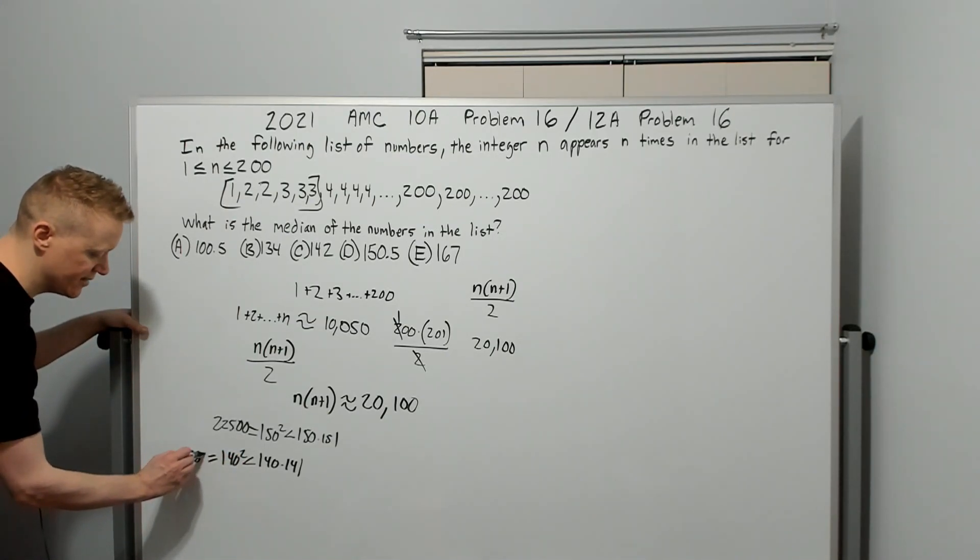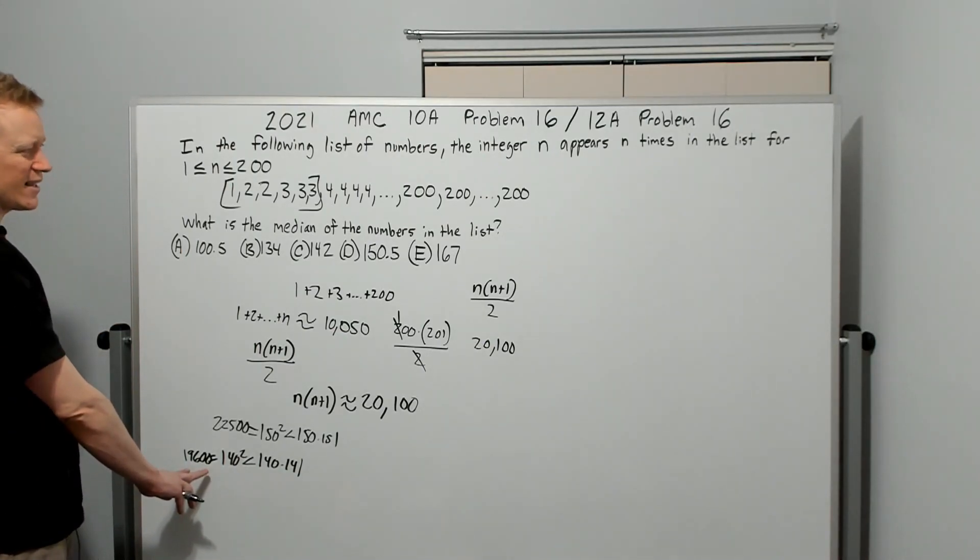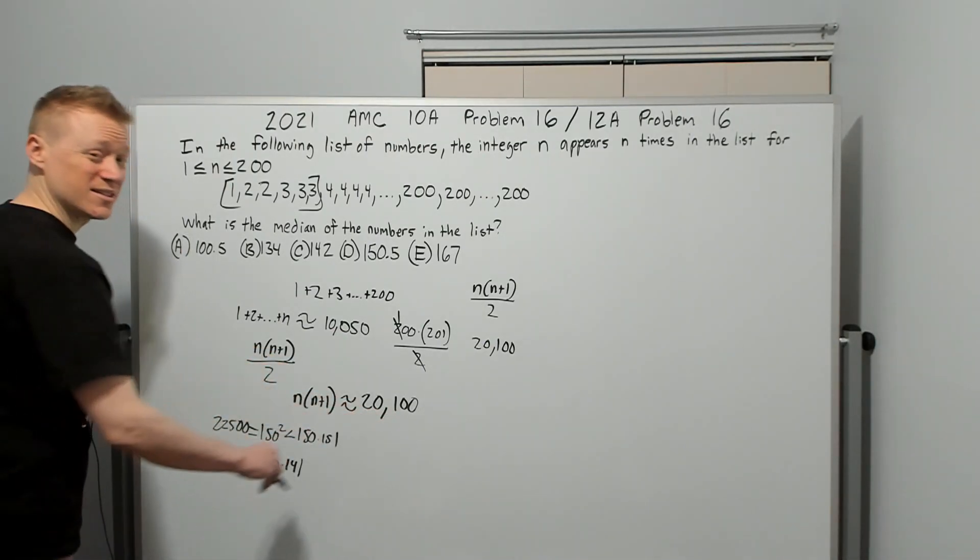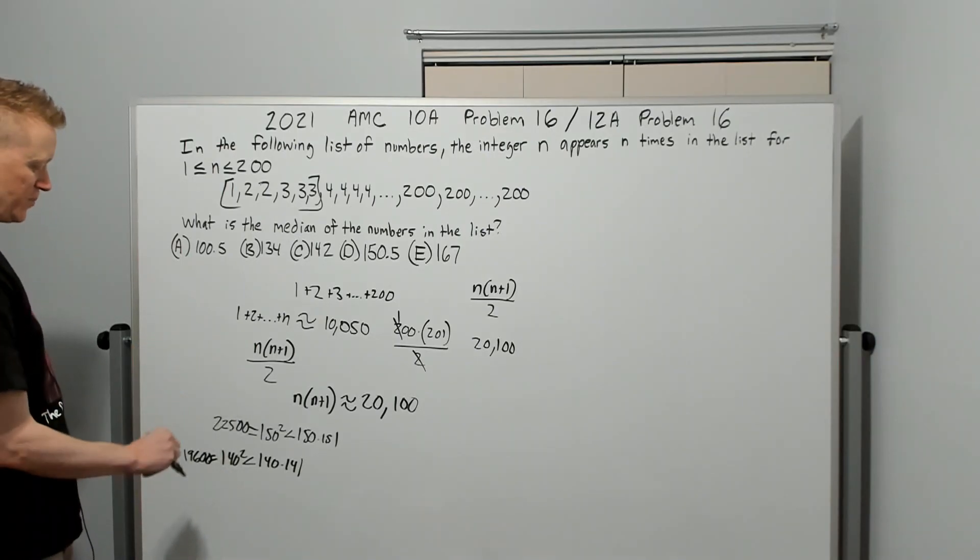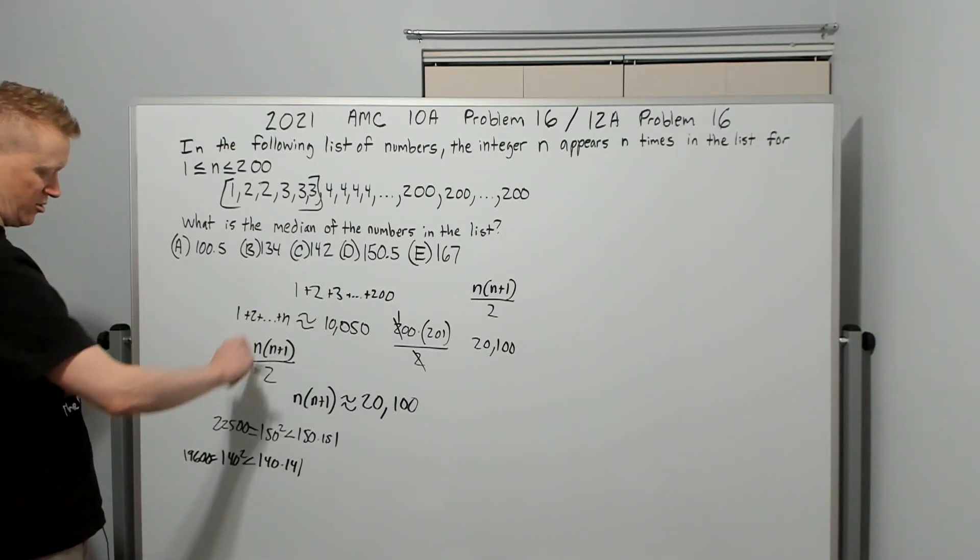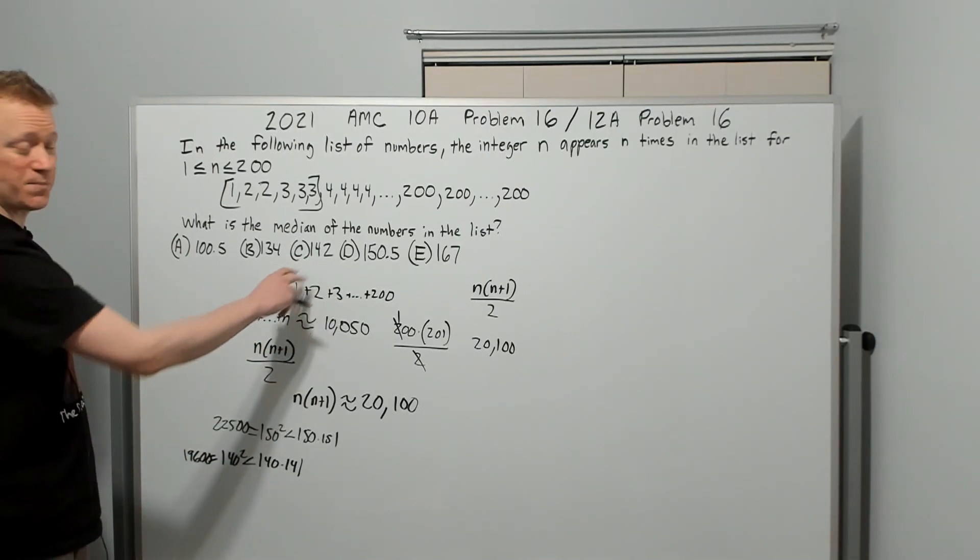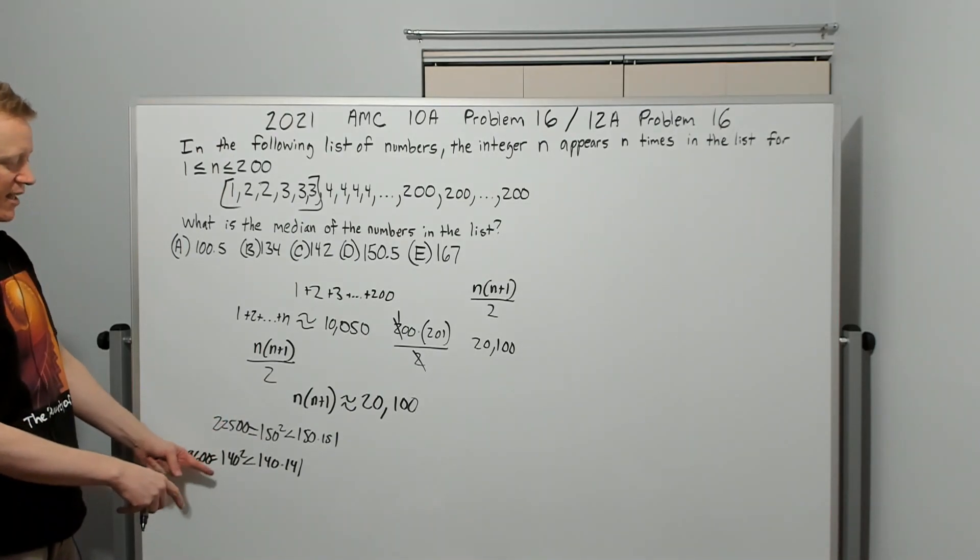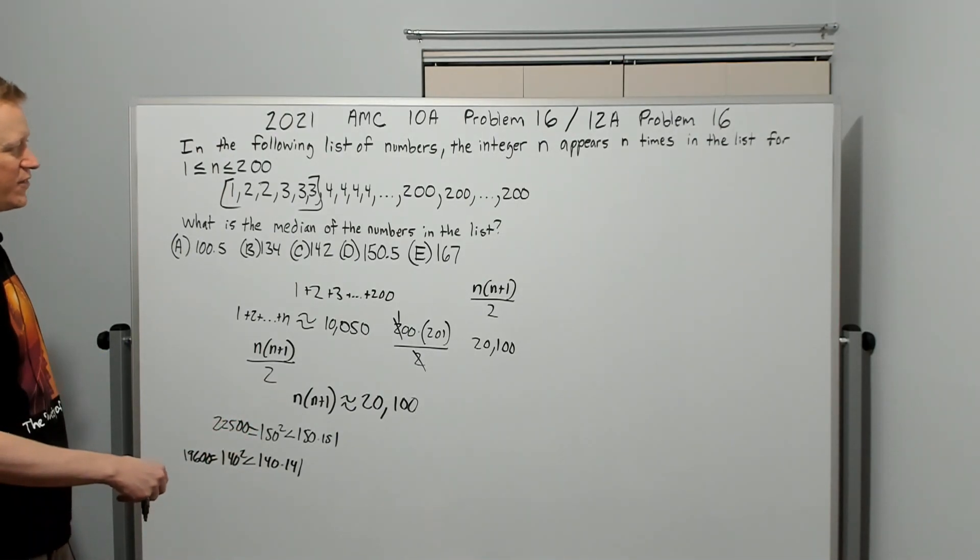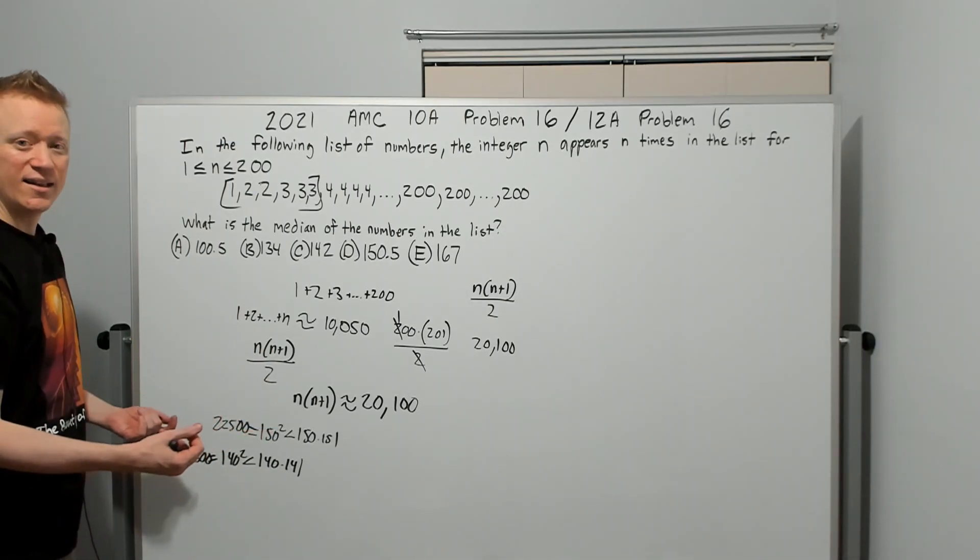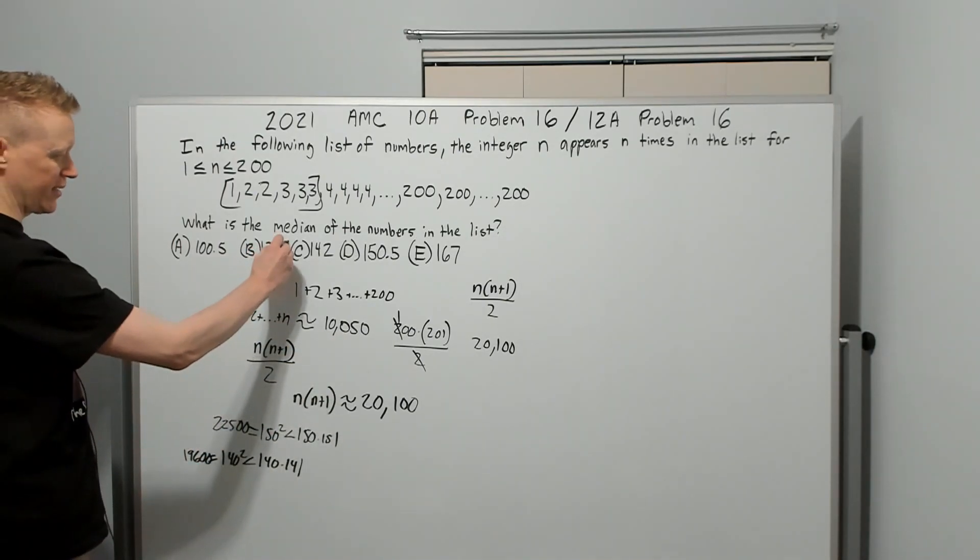This is 19,600. That's close to this. It's got to be that when I get to this number here it must be the answer. It has to be between the 140th and 150th iteration that we get to this number.